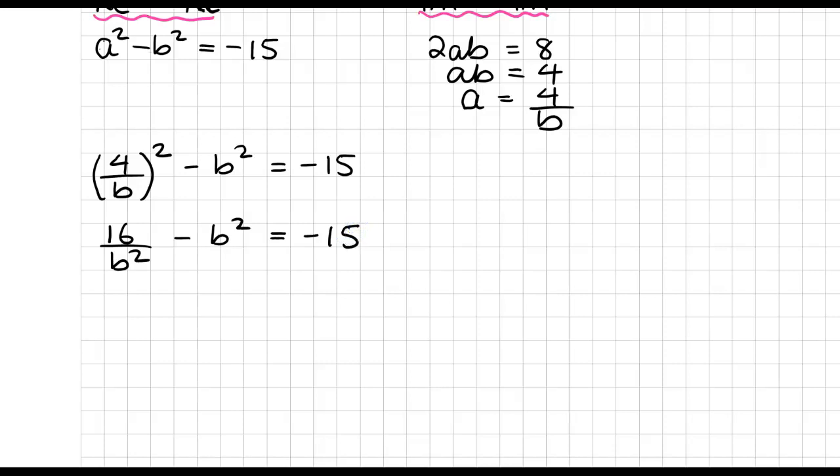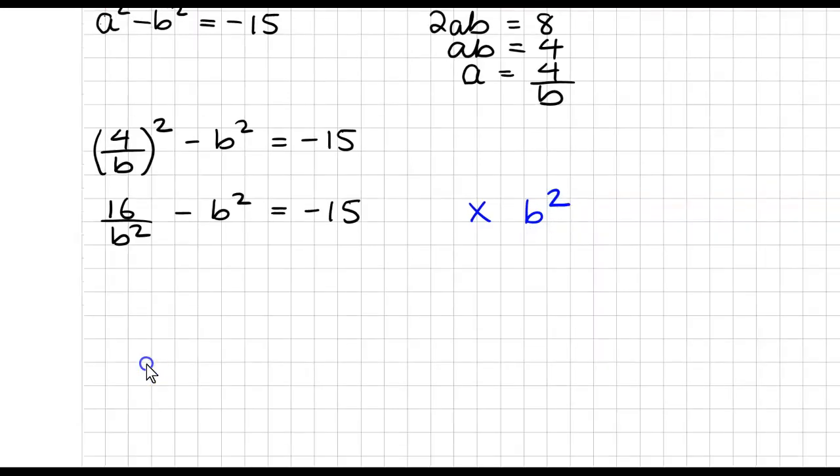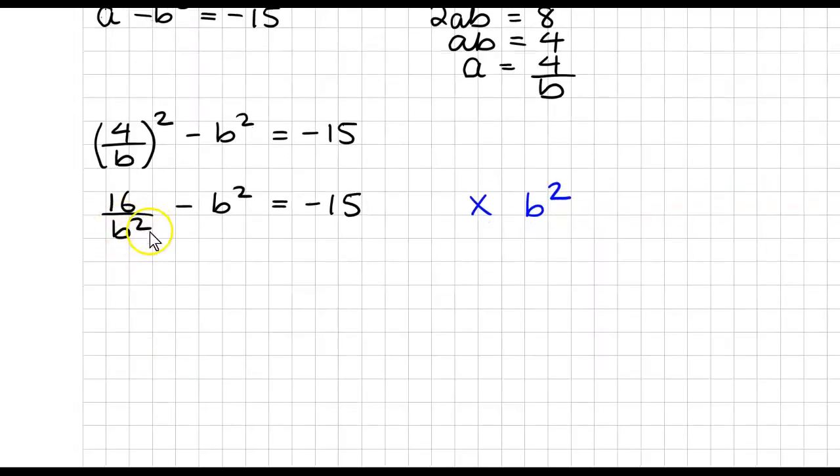Now the next thing I'm going to do is, I'm going to multiply all the way across by B squared, just to get rid of this thing on the bottom, because we're not going to be able to handle that very well like that.